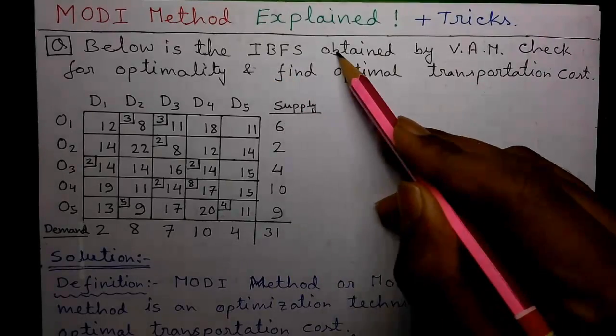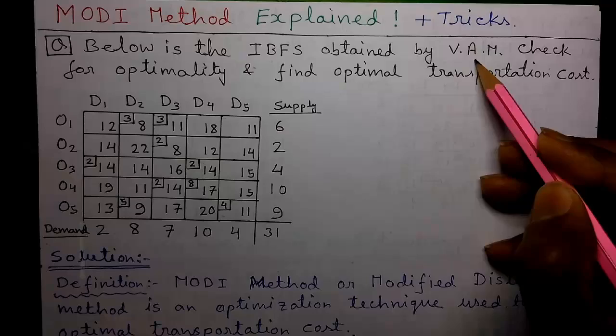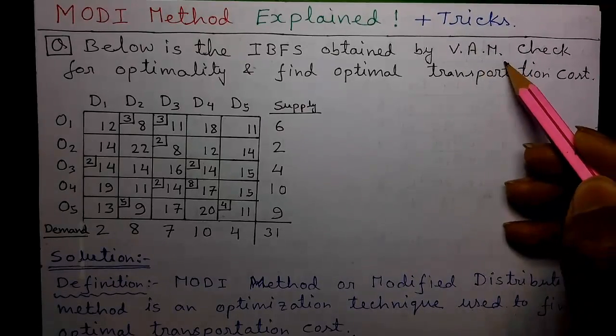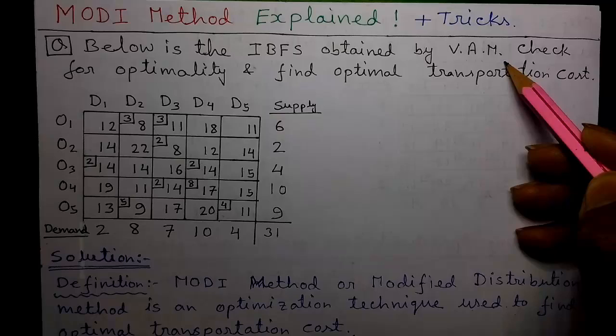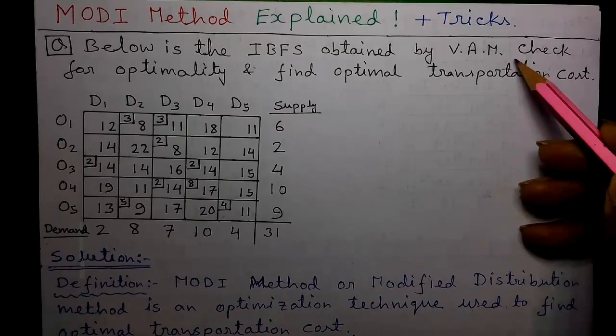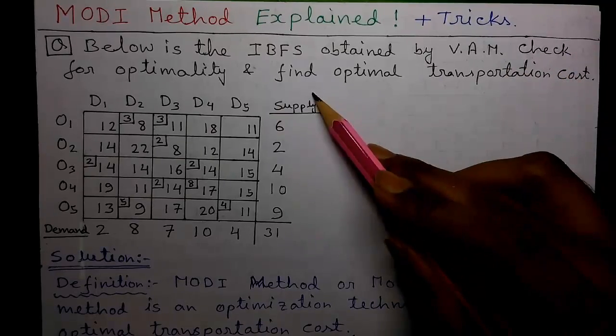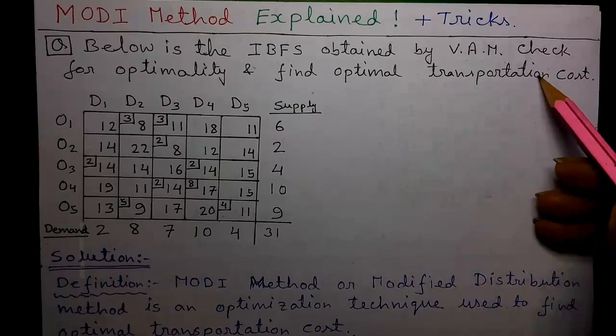Our question is, below is the IBFS given by VAM or Vogel's approximation method. I have separate videos on VAM, you can check them. Now check for optimality and find the optimal transportation cost.